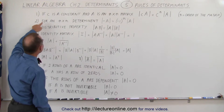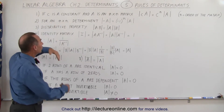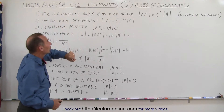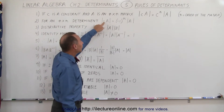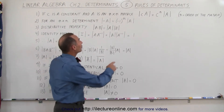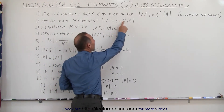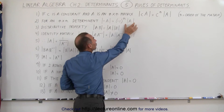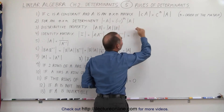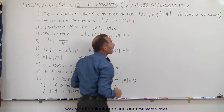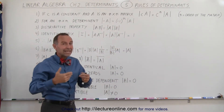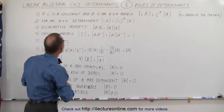The second rule is that for an n by n matrix, if we take the determinant of the negative of the matrix, it is equal to negative 1 to the n power times the determinant of the matrix. This is really the same as rule one where we replace the constant with negative 1. Notice how the sign changes as the order of the matrix changes.